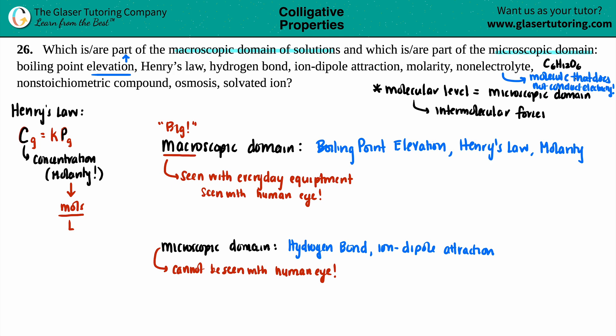All of your covalent non-polar molecules like H2, N2, O2, they're all non-electrolytes. So this would be clearly seen in the macroscopic domain, especially for sugar.